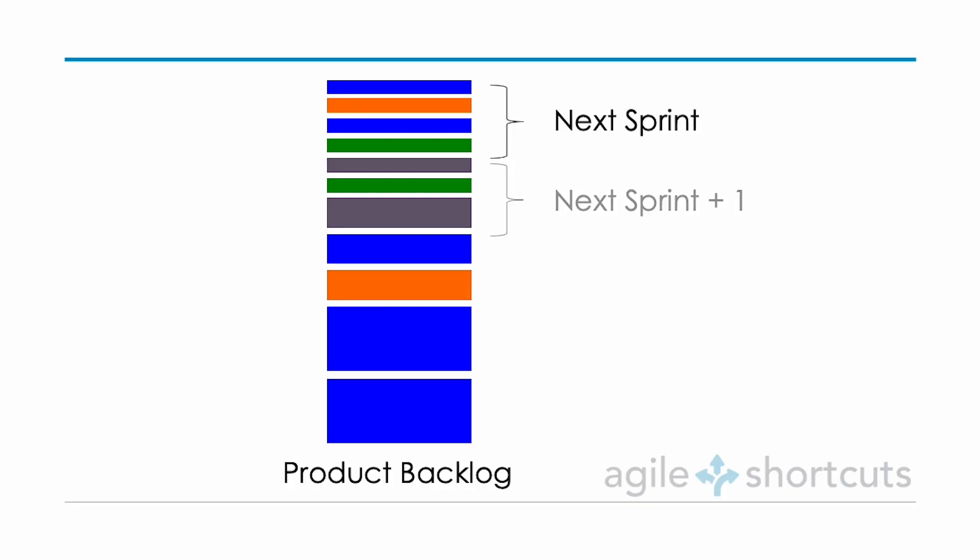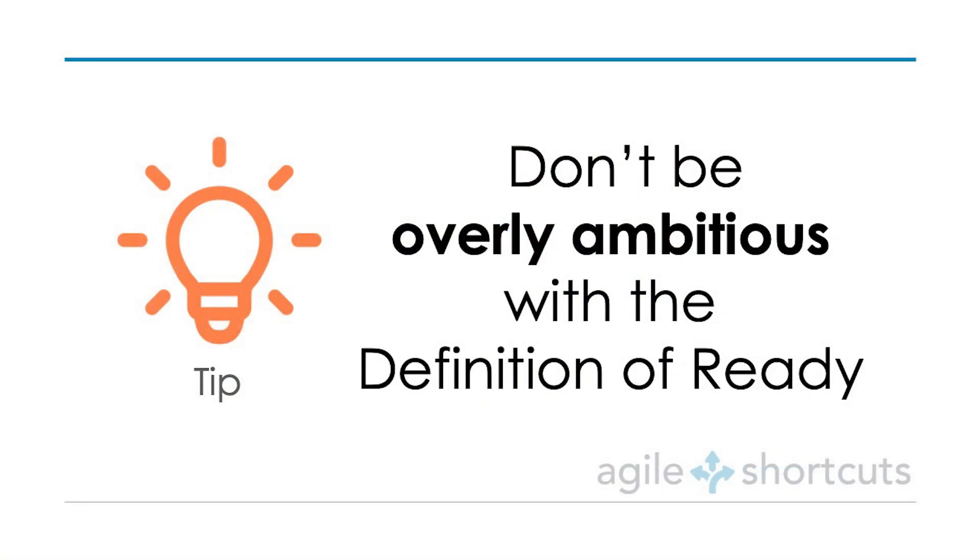A key tip: aim to stay one to two sprints ahead with sprint-ready product backlog items. With a Definition of Ready in place, the goal is for the next one to two sprints' worth of product backlog items to meet the Definition of Ready, ensuring you always have well-defined, well-understood, and appropriately sized items ready for your sprint planning session.